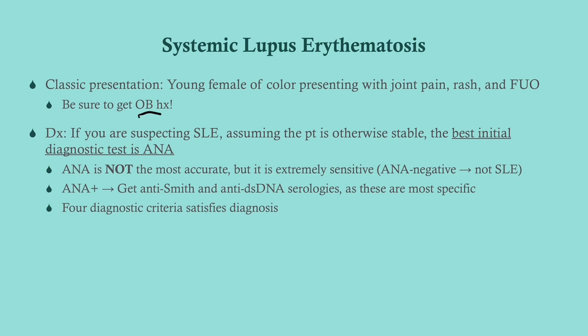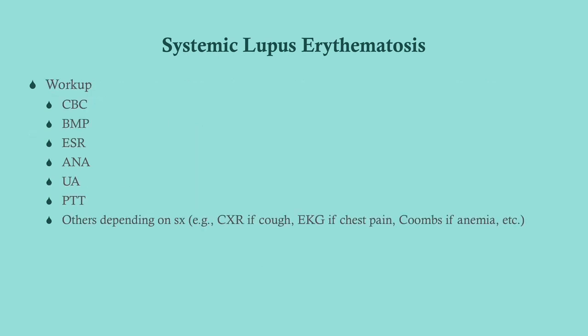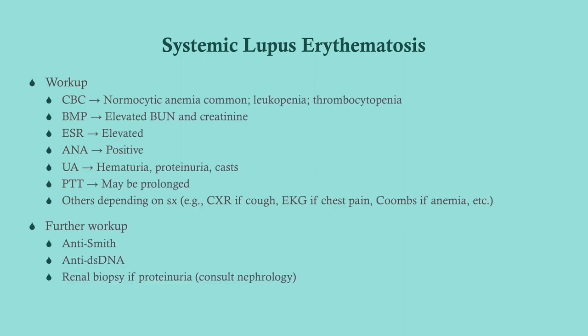ANA is very sensitive, so if it comes back positive, you then want to get anti-Smith and anti-dsDNA serologies because they're more specific. I would start with a CBC and a BMP, get a sed rate because lupus is always inflammatory, get an ANA, and get a urinalysis because we're looking at renal function. The BUN and creatinine help there, but the urinalysis is more definitive at telling you if you have renal damage. Also get a PTT to look for antiphospholipid syndrome. Then you can get other tests depending on symptoms — use your clinical judgment.